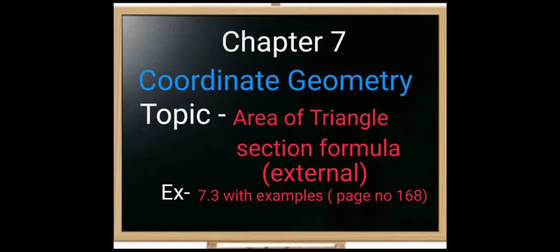In Chapter 7, Coordinate Geometry, the portions marked in red are deleted. Two topics are removed: the area of triangle (completely deleted, including all related problems), and the section formula — specifically only the external division is excluded; internal division is still included. The deleted content is Exercise 7.3 along with its examples, which you can verify on page 168 of your textbook.